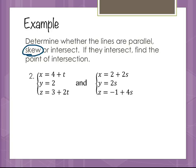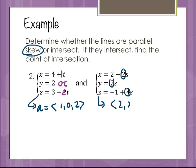We have two lines defined parametrically. The vector from the first line is the coefficients of t: (1, 0, 2). The vector from the second line is (2, 2, 4). There's no scalar multiple that takes one to the other — if nothing else, there's a 0 in the middle of the first vector and a 2 in the second, and you can't multiply 0 by anything to get 2. So these lines are not parallel.